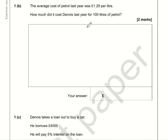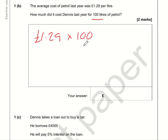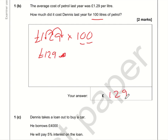Part B: the average cost of petrol last year was £1.29 per litre. How much did it cost Dennis if he used 100 litres? That is £1.29 multiplied by 100. Similar to part A, we're multiplying by a multiple of ten, so we move the decimal point two positions. The answer is £129.